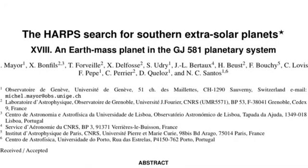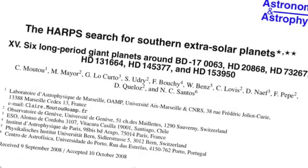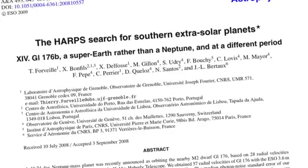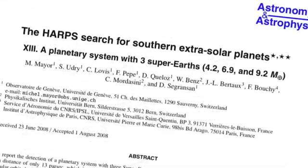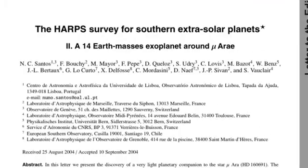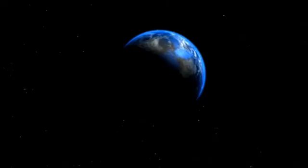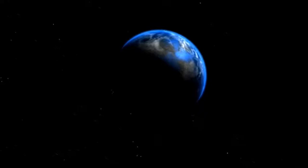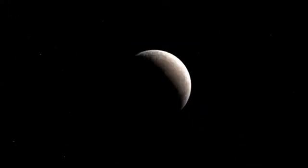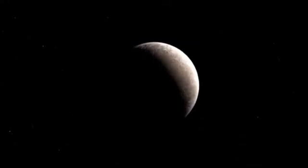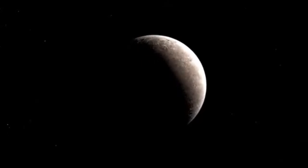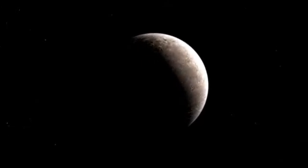The program soon proved very successful. Using HARPS, Mayor's team discovered, among others, the first super-Earth around Mu Ara, the trio of Neptunes around HD 69830, Gliese 581d, the first extrasolar planet in the habitable zone of a small star, and the lightest exoplanet ever detected around a normal star, Gliese 581e.